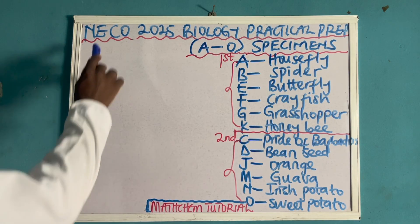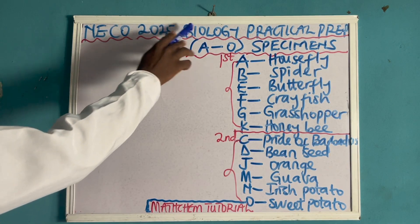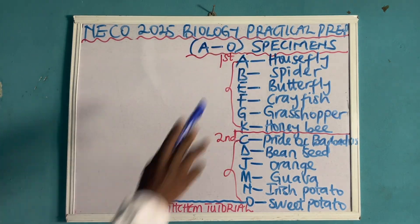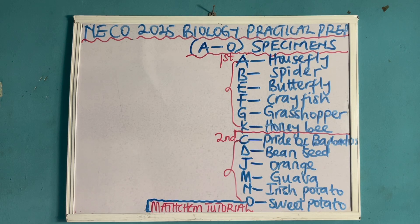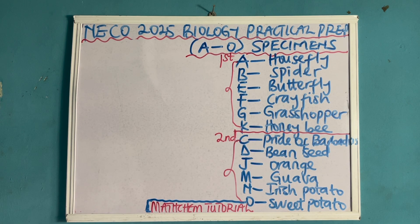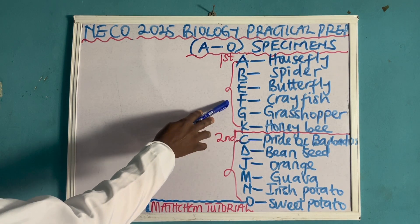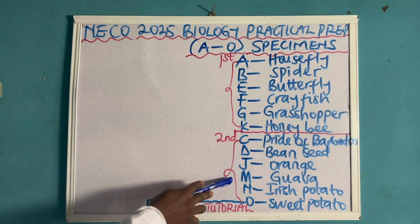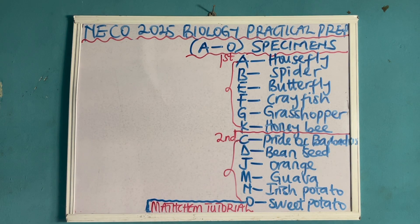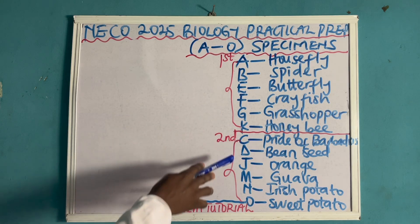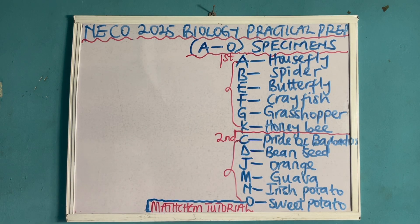In this video, we will be looking into NERCO 25 biologic practical prep. The specimens are labeled specimen A to O, and I will be classifying the specimens into 3 categories. This is the first category, second category, and then I am going to write the third category after I am done with the first and second category.